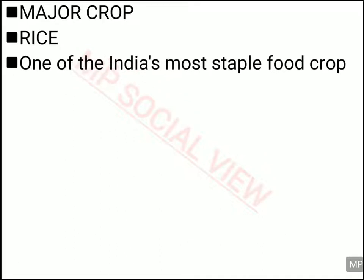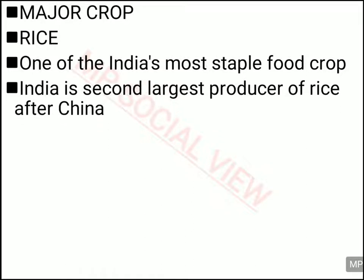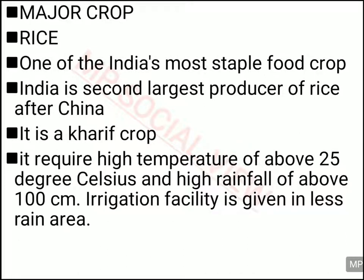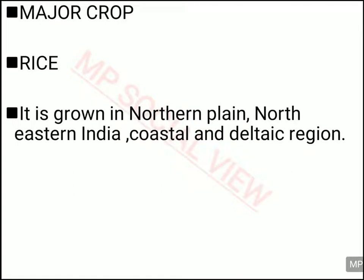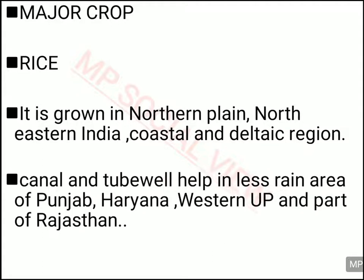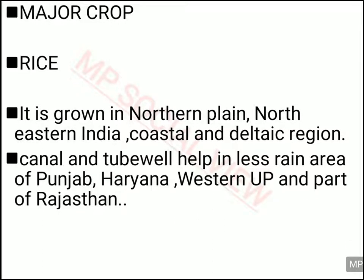Now let us discuss about the major crops of our country. First, rice — this is the most important staple crop of India, and India is the second largest producer of rice after China. It is basically a Kharif crop, requiring a temperature of about 25 degrees Celsius and rainfall of about 100 cm. If rainfall is not sufficient, rice cultivation can also be done with irrigation. Mostly, rice is grown in the Northern Plains, Northeastern India, coastal and deltaic regions. With canal and tube-well irrigation, rice cultivation is also possible in Punjab, Haryana, western UP and parts of Rajasthan.